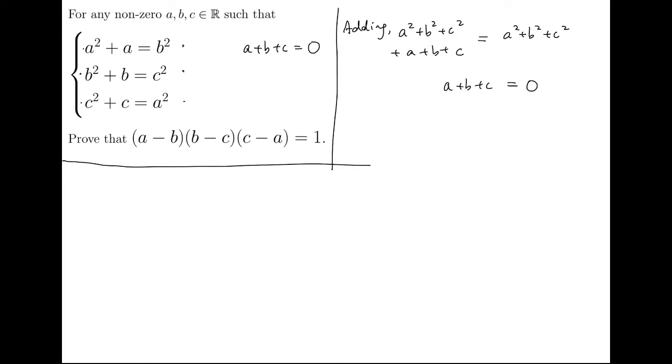Having no idea where to go, let's look at the thing that we need to prove: a minus b, b minus c, c minus a. How can we get them from the equations we have? The answer is to produce difference of squares, so we can get these terms when factorizing. So, for these three equations, I write a, b,